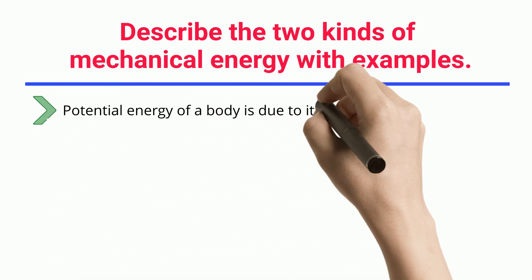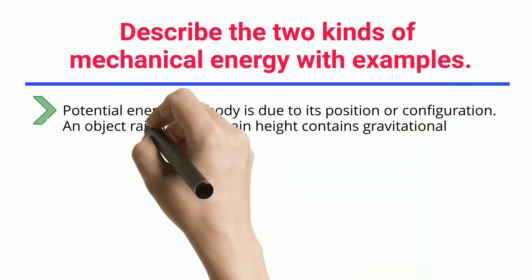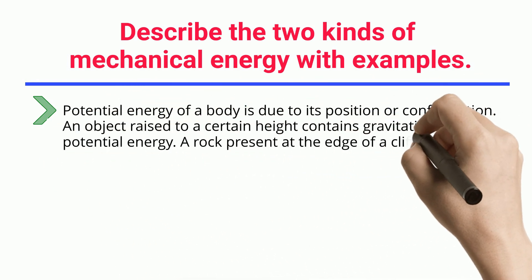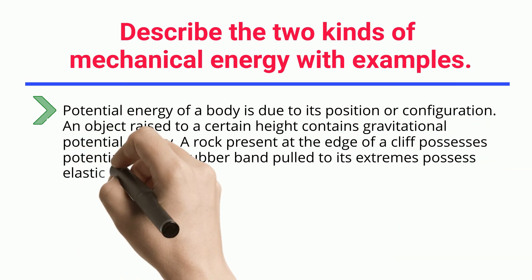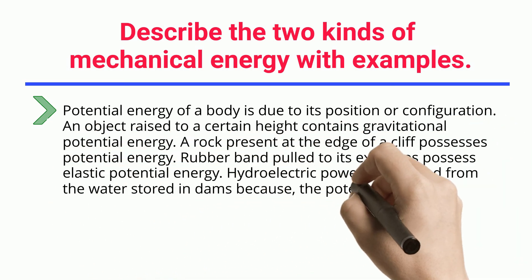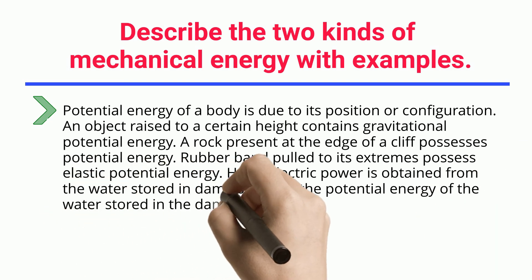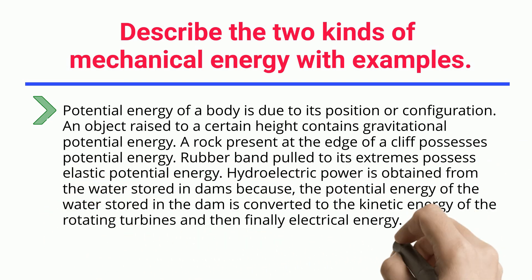Potential energy of a body is due to its position or configuration. An object raised to a certain height contains gravitational potential energy. A rock present at the edge of a cliff possesses potential energy. A rubber band pulled to its extremes possesses elastic potential energy. Hydroelectric power is obtained from the water stored in dams because the potential energy of the water stored in the dam is converted to the kinetic energy of the rotating turbines and then finally to electrical energy.